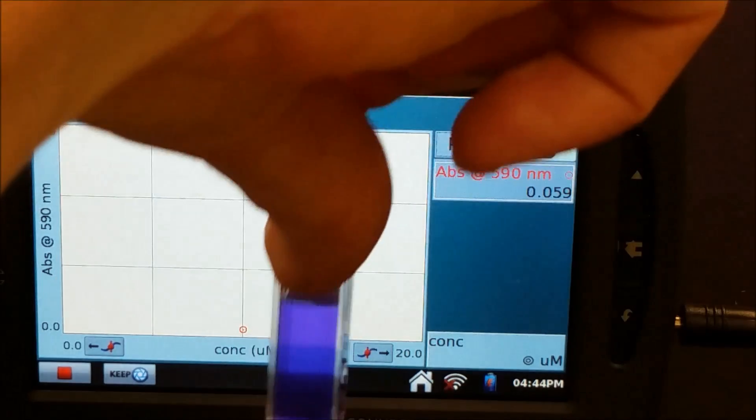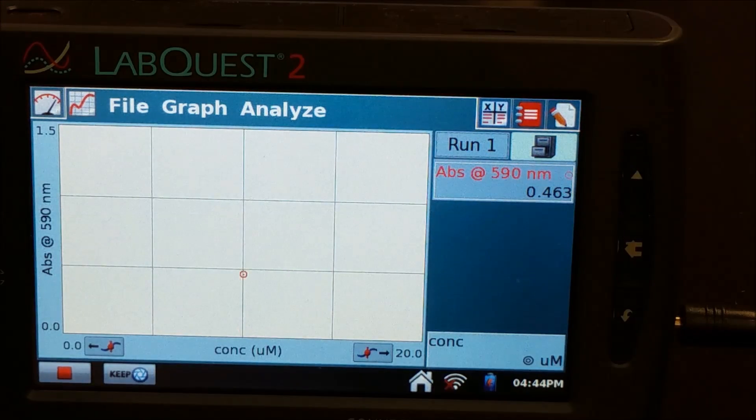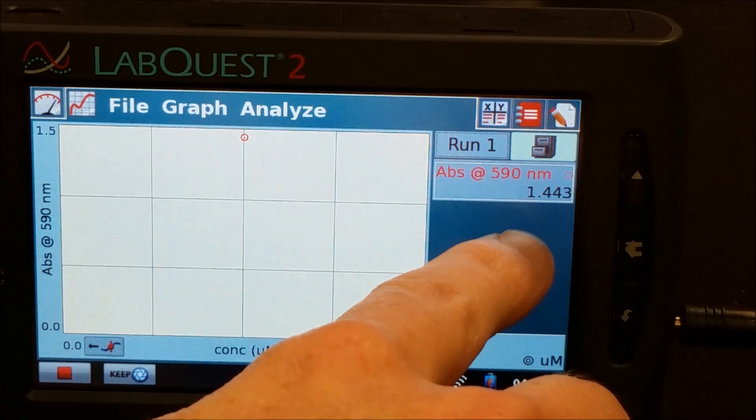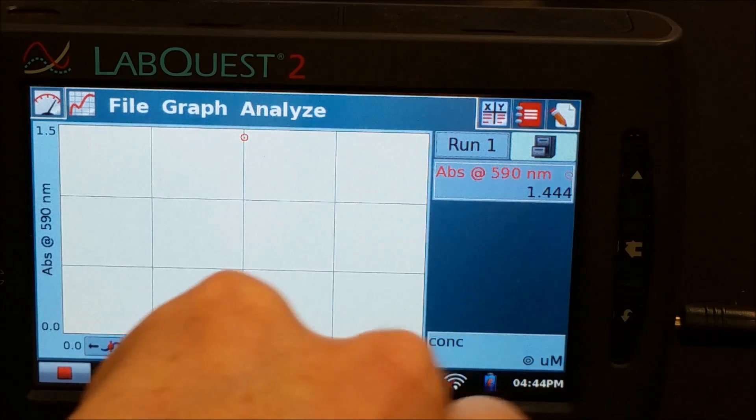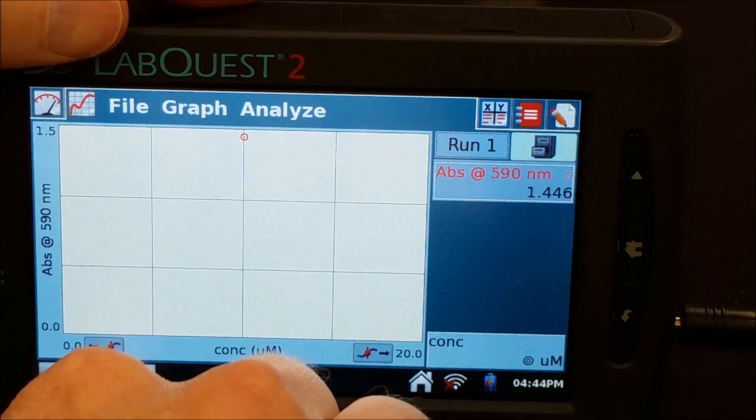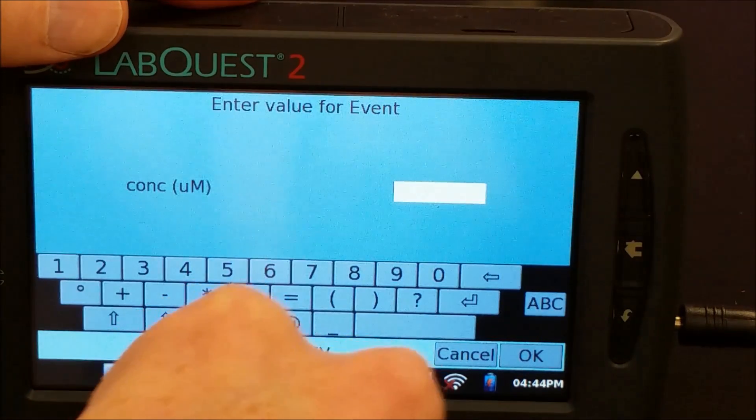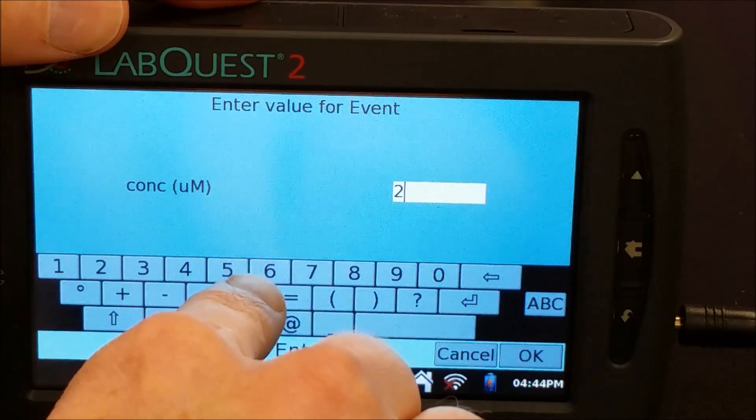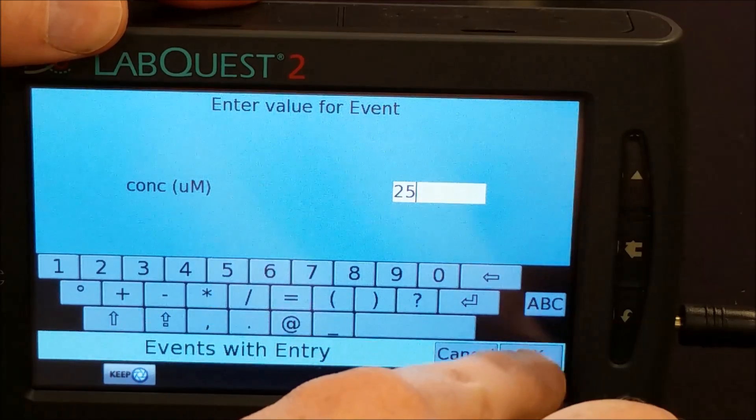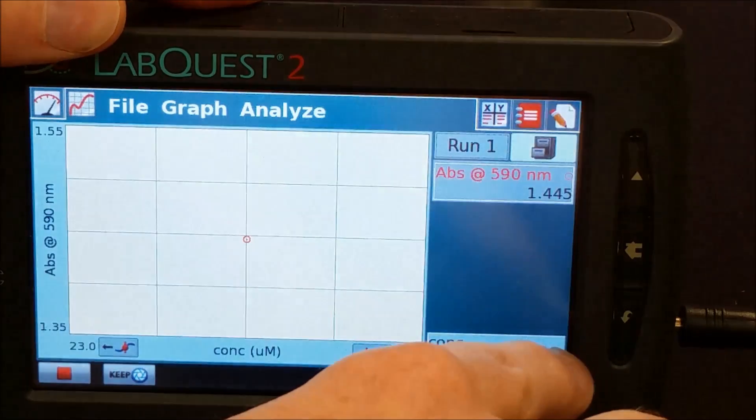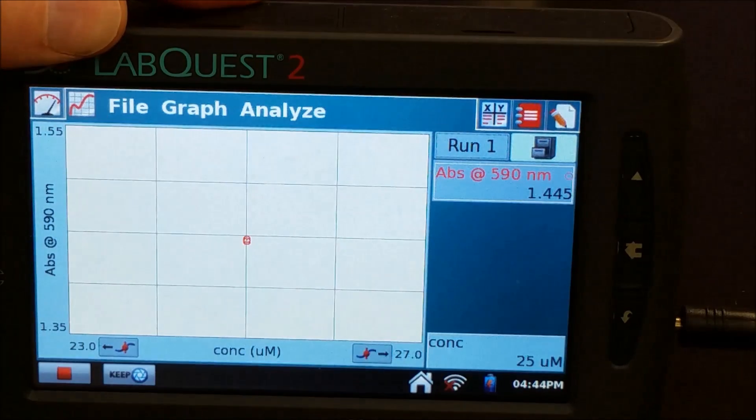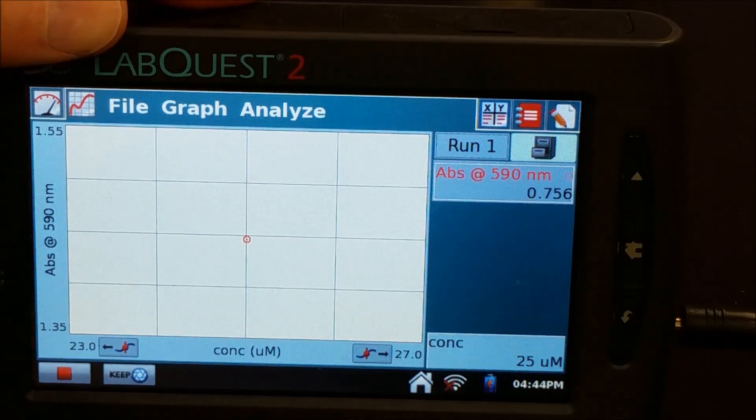And I'm going to put in my first sample of the 25 micromolar into the spectrophotometer. And when I do that, the absorbance goes up. And when it steadies, I want to hit keep and type in 25 micromolar. So now that that's steady, I'm going to take that out. I'm going to put in the next one, the 20 micromolar.